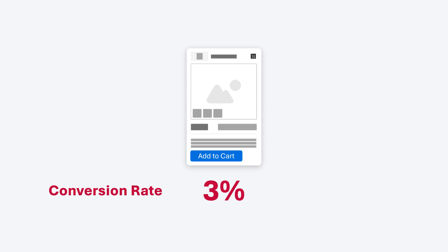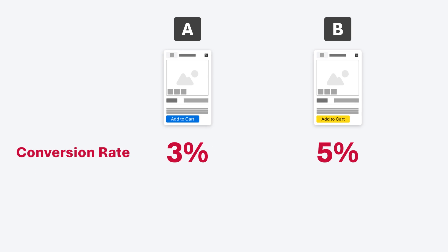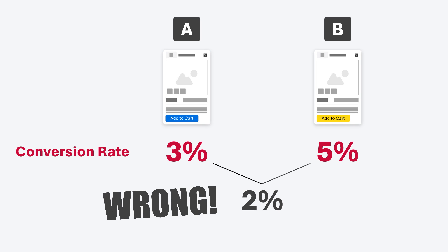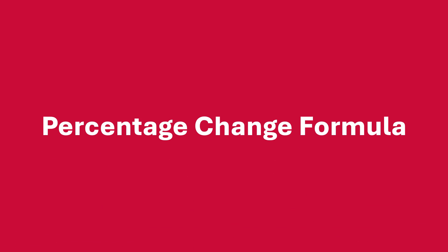We're going to start out with an example. We have a webpage with a conversion rate of 3%, and we're going to call this page A. We also have another webpage, page B, that has a conversion rate of 5%. Typically when you see these two numbers, it's very easy to think that the difference is 2%. But this is wrong. The difference is actually 66.7%, and in order to calculate this, we need to know the percentage change formula.